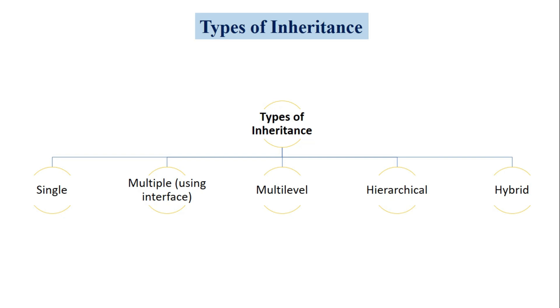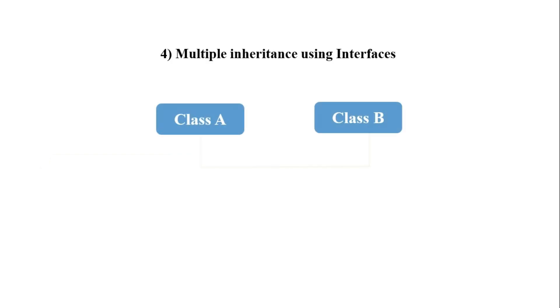In C#.NET, multiple inheritance is not supported. So instead of the class keyword, we use the interface keyword to write the program for multiple inheritance. Before proceeding to the program, let's understand what multiple inheritance means. Multiple inheritance means there are multiple base classes and a single derived class — that type of inheritance is called multiple inheritance.